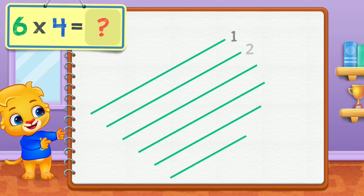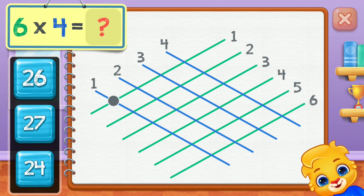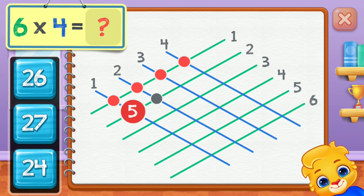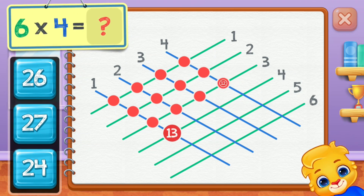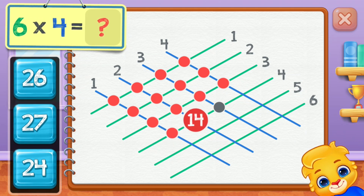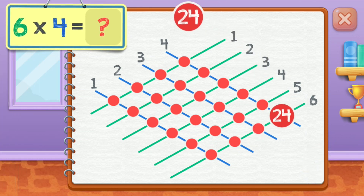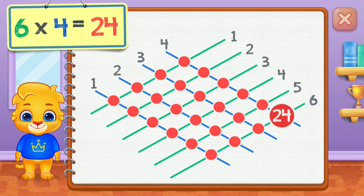Six times four equals... one, two, three, four, five, six, seven, eight, nine, ten, eleven, twelve, thirteen, fourteen, fifteen, sixteen, seventeen, eighteen, nineteen, twenty, twenty-one, twenty-two, twenty-three, twenty-four. Six times four equals twenty-four.